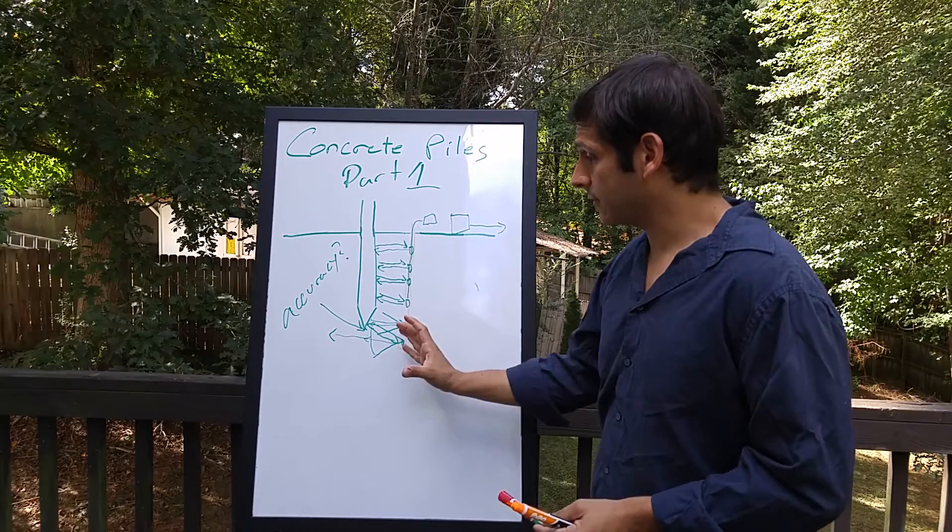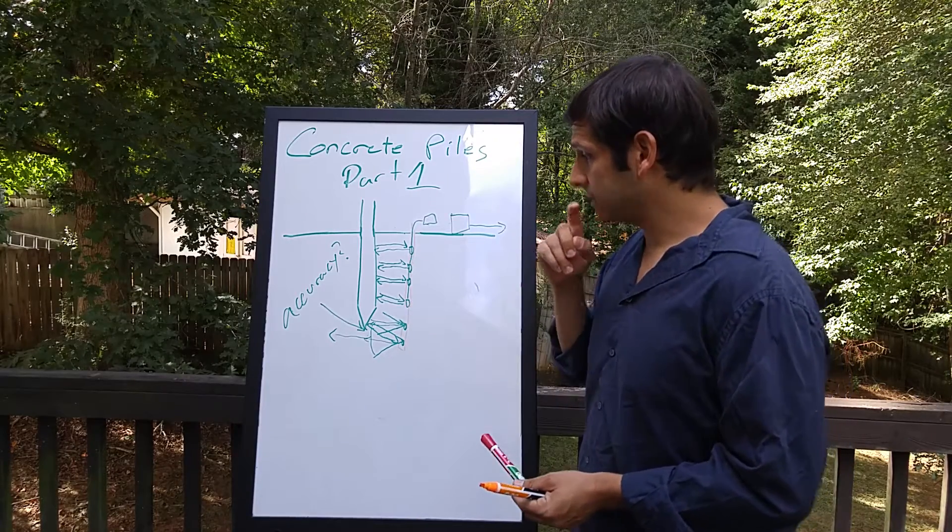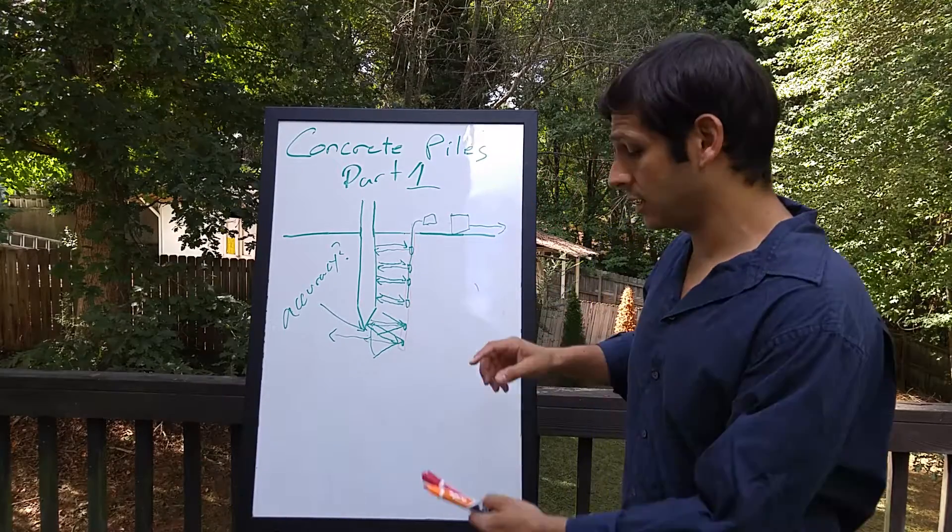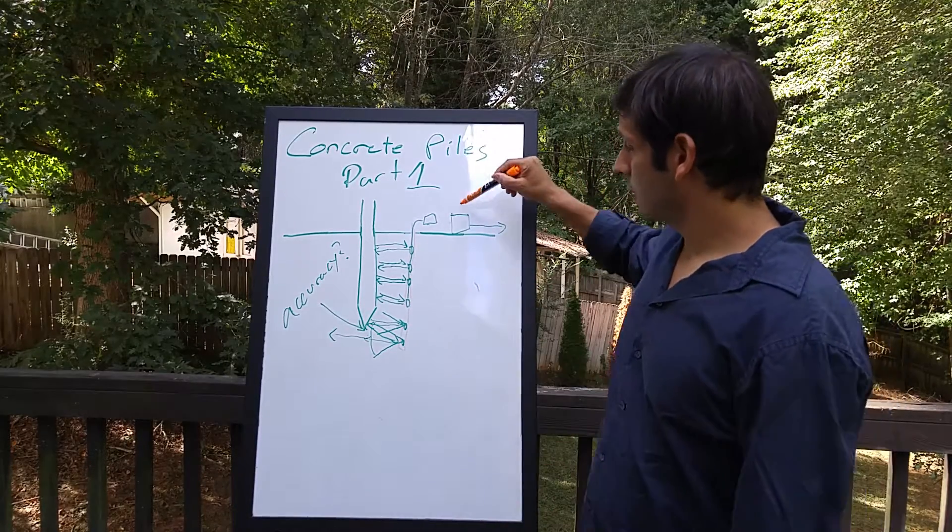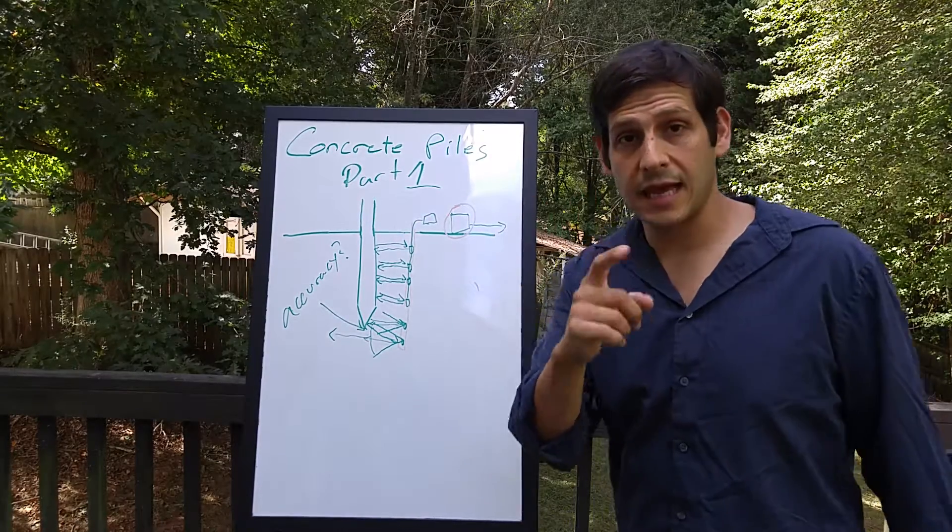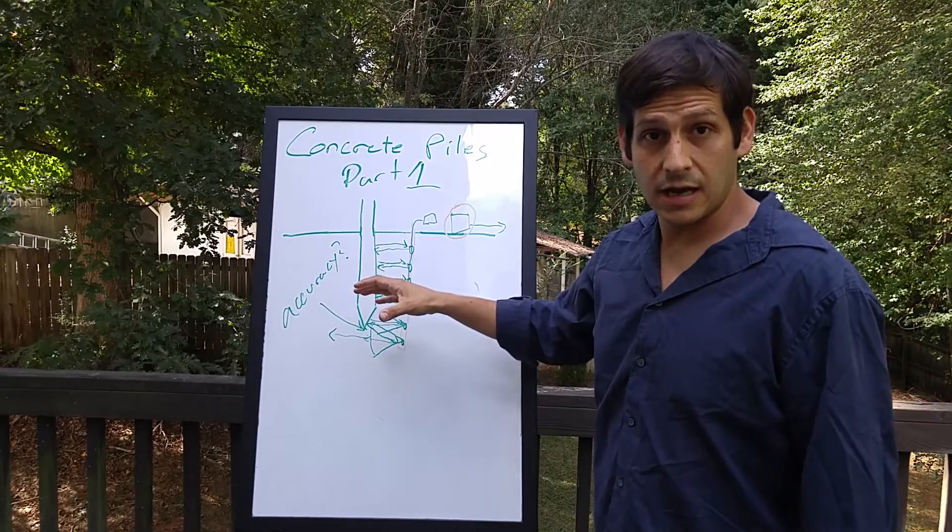So this is one way to do it. And in the next video, part two, we'll show you another example where you can actually use ground penetrating radar coming across the surface to potentially locate the length of concrete piles, but only in certain circumstances.